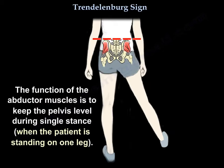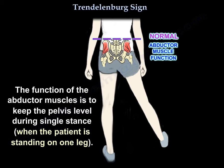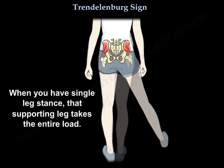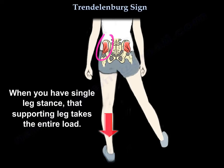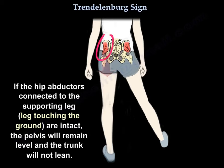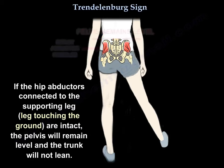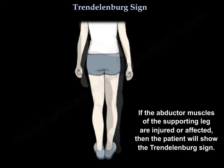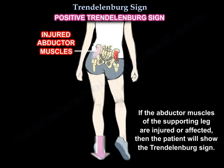The function of the abductor muscles is to keep the pelvis level during single stance — meaning when the patient is standing on one leg. When standing on both legs, each leg carries half of the body weight. During single leg stance, the supporting leg takes the entire load. If the hip abductors connected to the supporting leg are intact, the pelvis will remain level and the trunk will not lean.